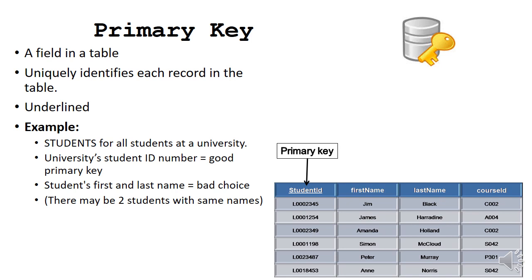Another piece of terminology, the primary key. The primary key is a field which is chosen in a table. And it's chosen so that it uniquely identifies each record in the table. It's usually underlined. Like in the table below, you will see that student ID is underlined.